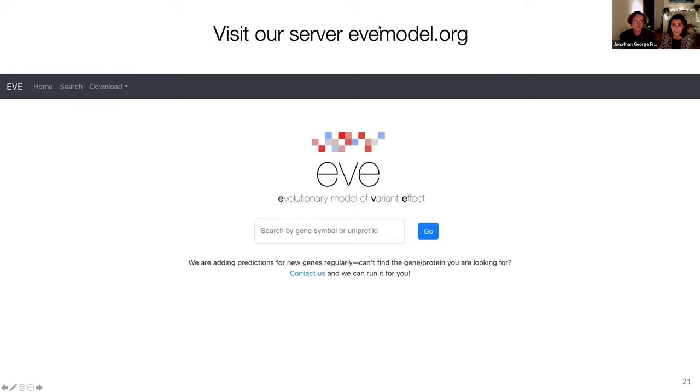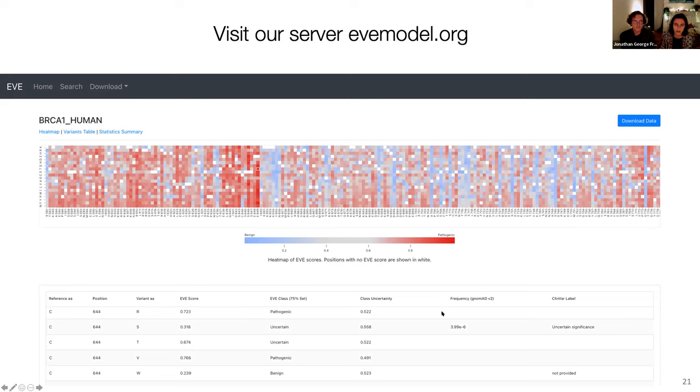So just to finish off, we put all our results on our server, evemodel.org, that we encourage you to go and see. So our idea is that we only have currently the results for 3,200 proteins, but we are constantly updating the website with more results. And hopefully we hope to have results for the whole proteome. If there's something that you don't see there and you're particularly interested about, just reach out to us and we'll run it. And this is the kind of stuff that you can download. You can download heat maps like the ones that Midea and Johnny were talking about and also our scores, etc.